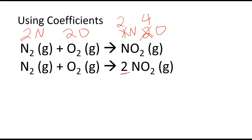Now I've got four oxygens on the right, only two on the left, so I'm going to have to put a coefficient of 2 here to make it so that I have four oxygens here as well.